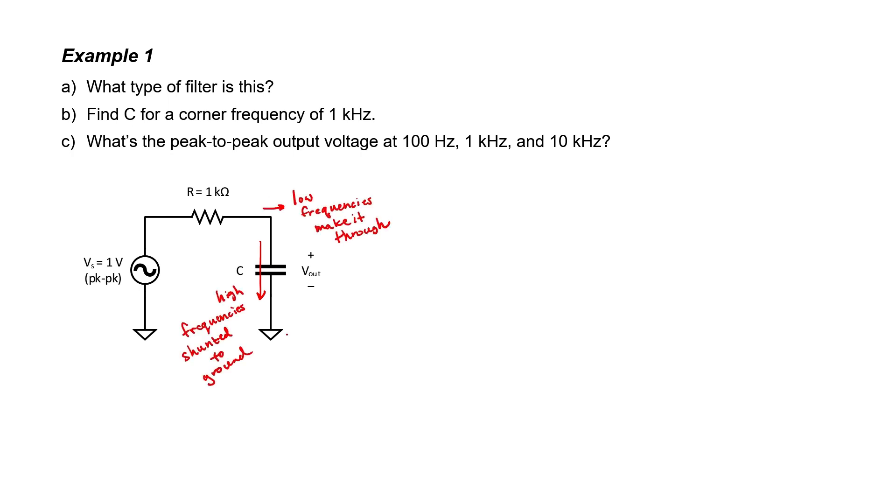Although we can see by inspection that this is a low-pass filter, let's derive the transfer function just to be sure. The transfer function is just the output voltage divided by the input voltage. In this case, I can use a voltage divider. We've got the impedance of the capacitor in the numerator, and we have the impedance of the entire circuit in the denominator.